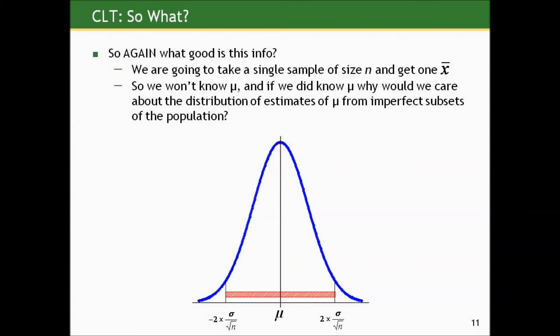So again, what good is that info? If we knew the truth, we wouldn't care what would happen under imperfect estimates of the truth. And furthermore, we're only going to take a single sample of size n and get one x-bar — we can't take multiple samples. So we won't know mu, and if we did know mu, why would we care about the distribution of estimates of mu from imperfect subsets? If we knew the mean, we wouldn't be doing any of this.